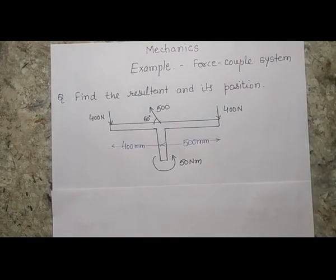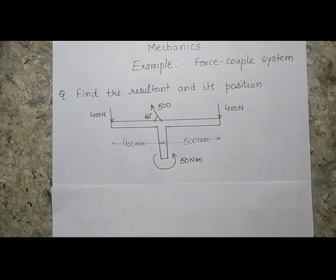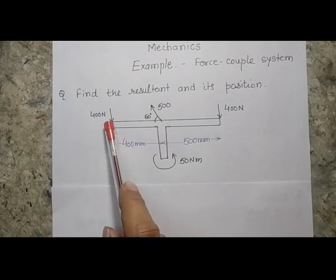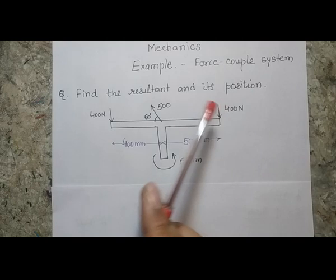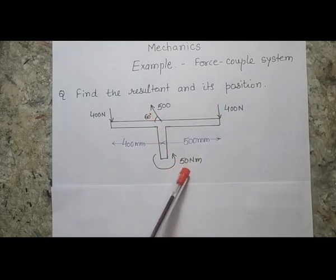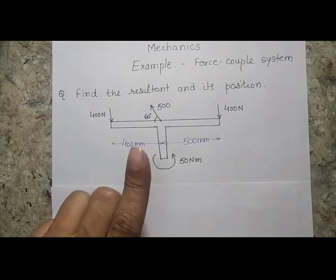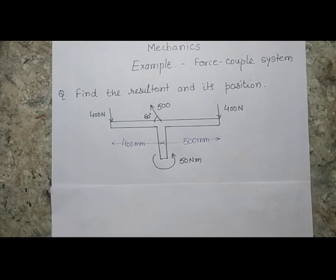This is the third lecture on the force-couple system. In this lecture we are going to solve a classic problem to get the resultant force and its position. I am showing a bar which is subjected to a number of forces as well as a couple: 400N, 400N, 500N, and a 50 N·m couple. This system is not in static equilibrium — this is one instantaneous snap of a body subjected to a number of forces.